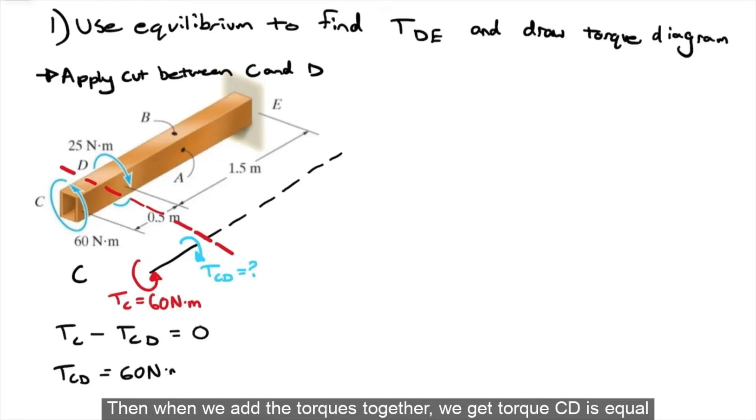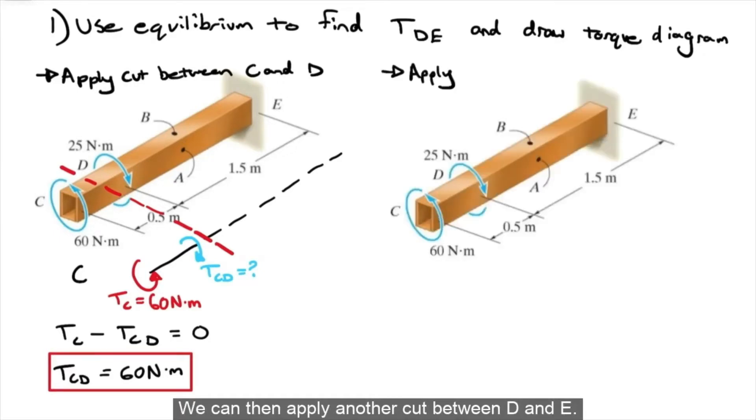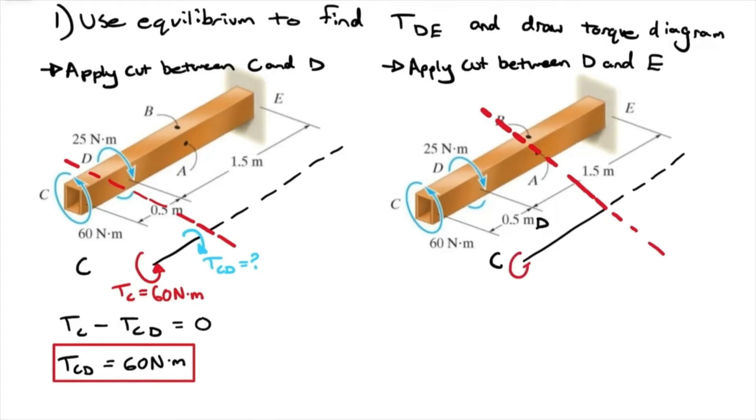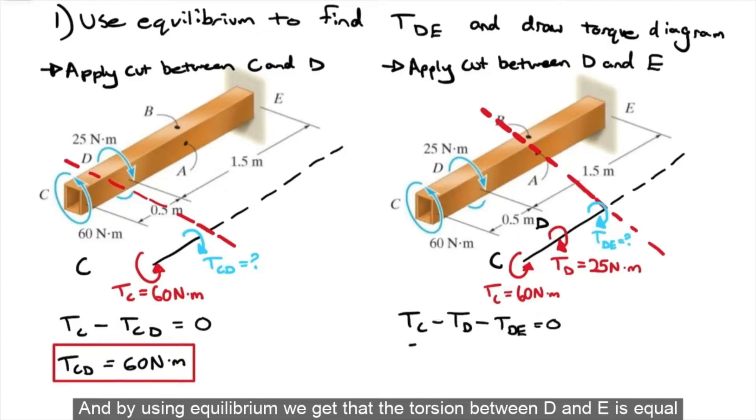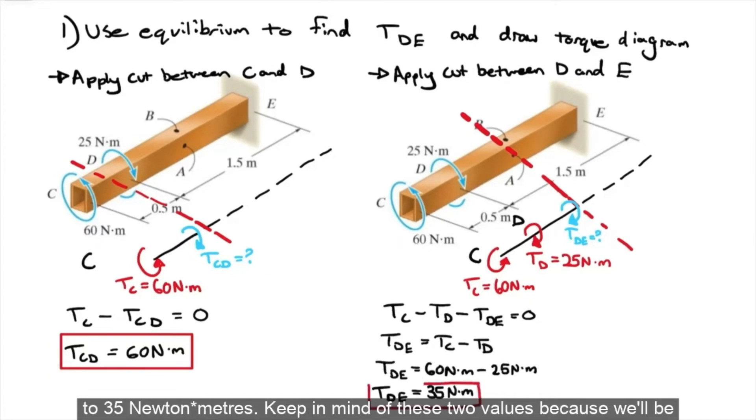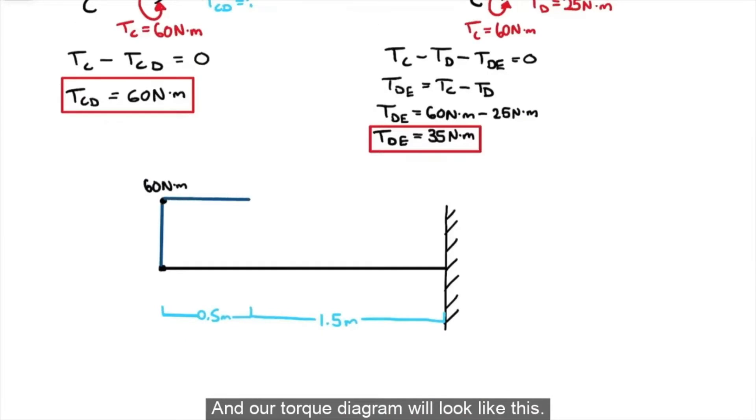we get torque CD is equal to 60 Newton meters. We can then apply another cut between D and E. And by using equilibrium, we get that the torsion between D and E is equal to 35 Newton meters. Keep in mind of these two values, because we'll be needing these later in the video. And our torque diagram will look like this.